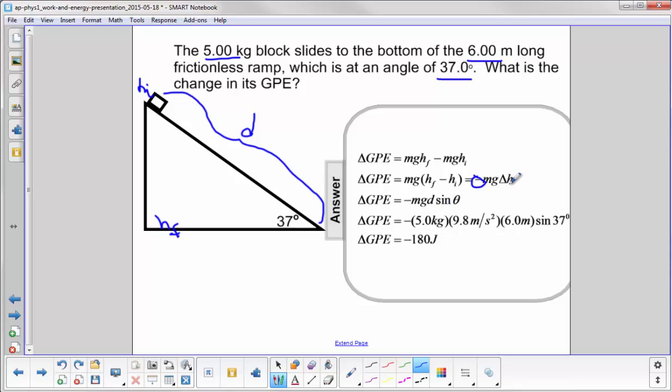Then we're going to replace delta h. This distance here is the hypotenuse times the sine of the angle that is opposite the side here. So we come up with negative mgd sine theta. We then put in our numbers that we were given, and we come up with the delta GPE of negative 180 joules.